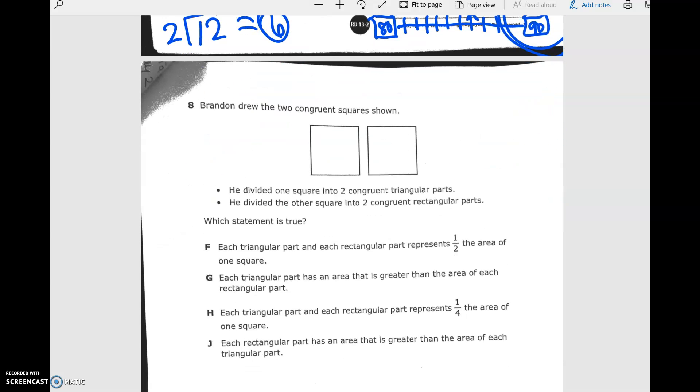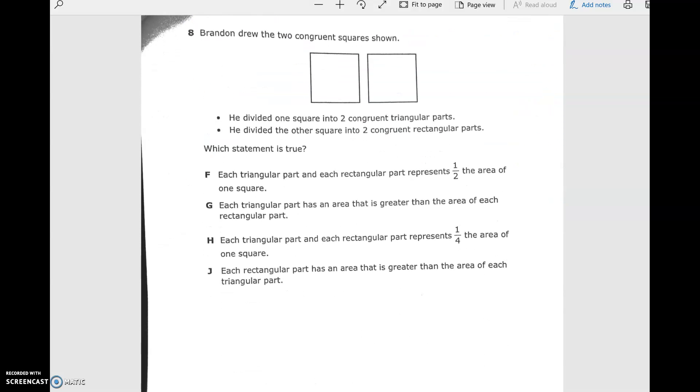We did it, friends. Let's go on to our other questions. I think there's only like six today. Brandon drew the two congruent squares shown. Remember, congruent means that they're the same size and shape. So like this heart and this heart, if they were perfect, are congruent. But, for example, this heart and this heart are not because they're bigger and smaller. He divided one square into two congruent triangular parts.